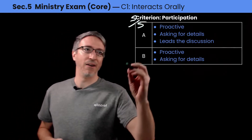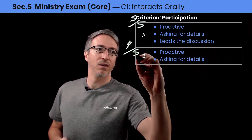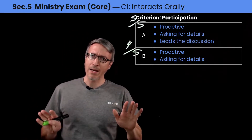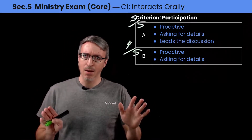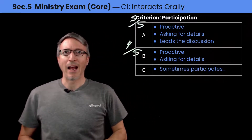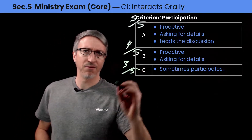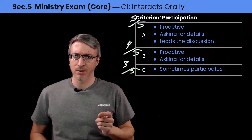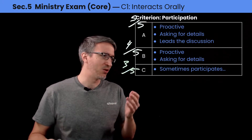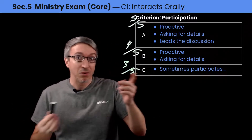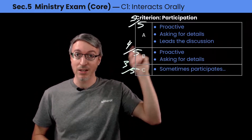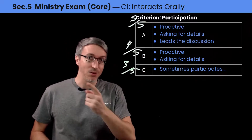You get a four on five when you are proactive and asking for details, but you're waiting a little bit more. You're just watching the game, but not participating as much as a five on five. Then you get three on five if you interact with the others but don't participate as much — you just wait for the others to finish. You still pass, because the main point of participation is interaction. So you need to interact with the others.